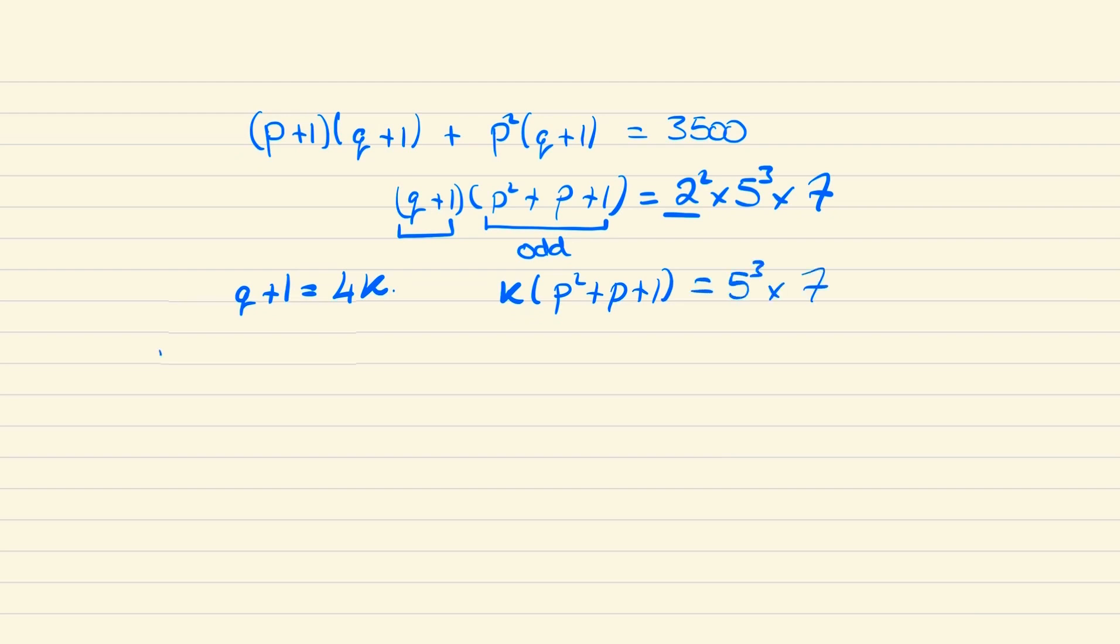And it's not too difficult to check that p²+p+1 is always going to be either 1, 2, or 3 mod 5. So we can say that p²+p+1 is never divisible by 5, so therefore k must equal 125.